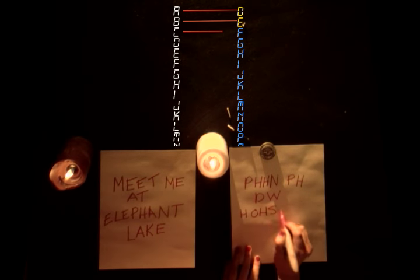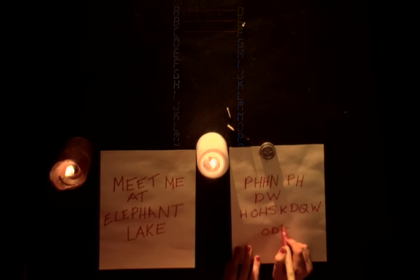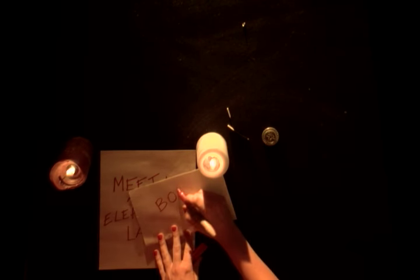So A becomes D, B becomes E, C becomes F, and so on. This unreadable or encrypted message is then sent to Bob openly.